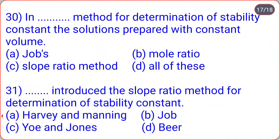In Job's method for determination of stability constant, solutions are prepared with constant volume. The slope ratio method was introduced by Harvey and Manning, while the mole ratio method was introduced by Yew and Jones. Remember: slope ratio → Harvey and Manning; mole ratio → Yew and Jones.